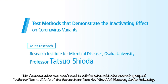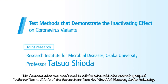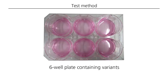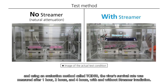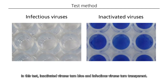This demonstration was conducted in collaboration with the research group of Professor Tatsuo Shioda of the Research Institute for Microbial Diseases, Osaka University. The virus variants were placed in a plate inside a streamer testing device, and using an evaluation method called TCID-50, the virus's survival rate was measured after one hour, two hours, and four hours with and without streamer irradiation. In this test, inactivated viruses turn blue and infectious viruses turn transparent.